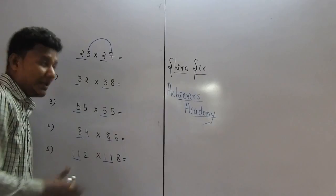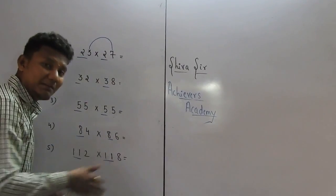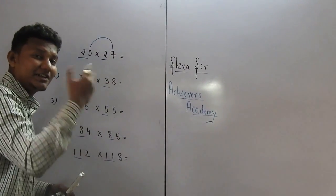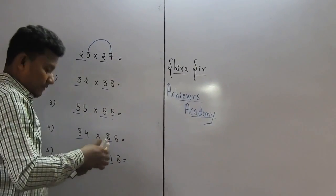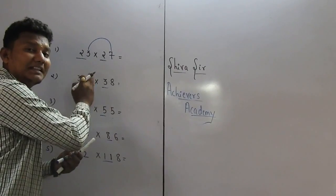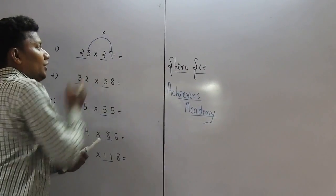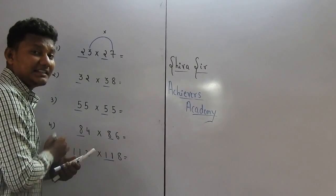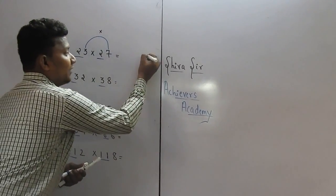Now see how to find the answer when our first digit is same and the sum of the second digits is equal to 10. Focus on 3 and 7. Multiply 3 and 7. What is 3 times 7? It is 21. Write the answer.